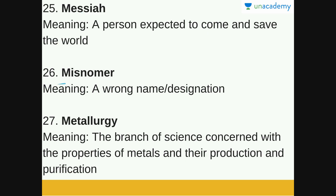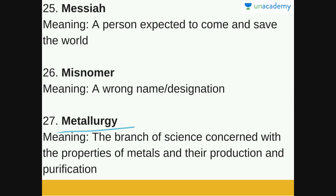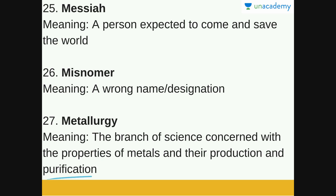Next is misnomer. A misnomer is a wrong name or designation. And the last word is metallurgy — the branch of science concerned with the properties of metals and their production and purification. We had a compulsory lesson on metallurgy in 10th grade, so it is the branch of science concerned with the properties of metals and their production and purification.